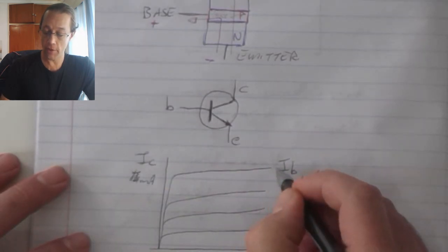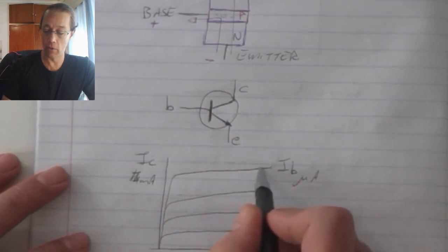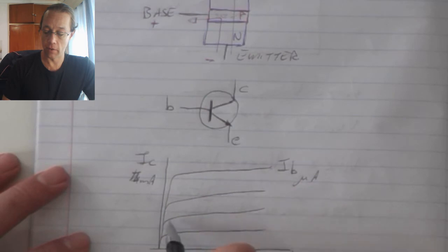The larger my base current becomes, the more the collector current will be. Less base current refers to a smaller collector current.